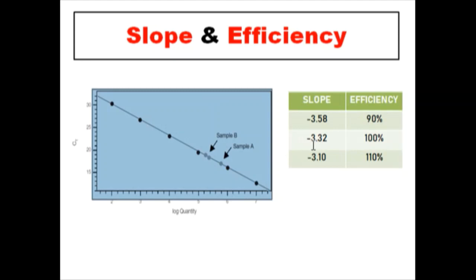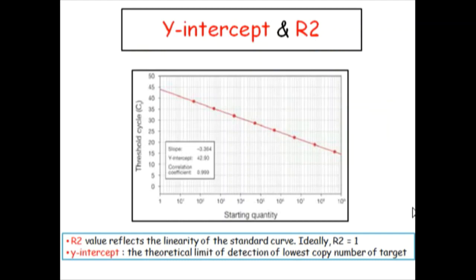But there are many experimental factors such as secondary structure and GC content of the amplicons which influence the reaction. In that case the slope might vary between minus 3.10 to minus 3.58. Overall, considering all the factors, efficiency between 90% to 110% is accepted for a real-time PCR.